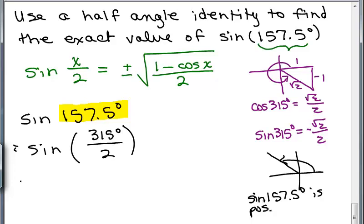That tells us we need to use the positive sign in front of this square root. Be careful that you're not looking at where 315 degrees lies to determine whether this is positive or negative. We're still looking for the sine of 157.5 degrees, so it's where that angle lies that will tell us whether we're going to use the positive or negative.